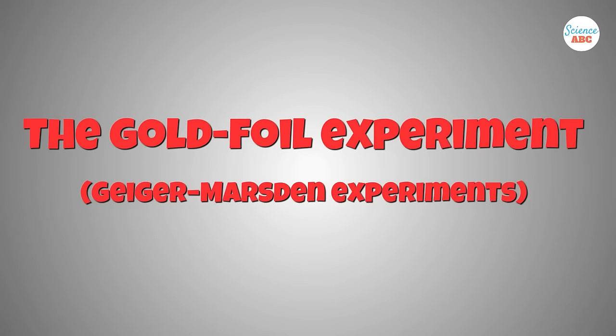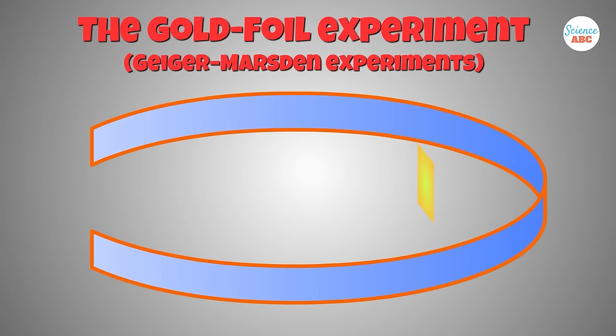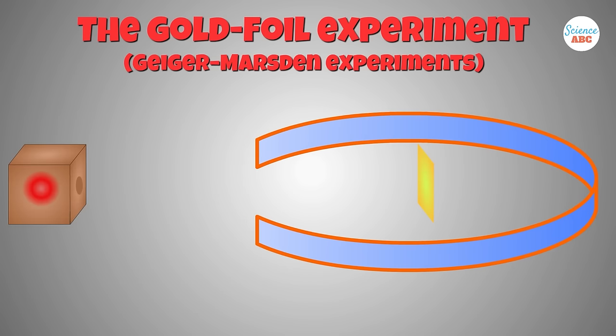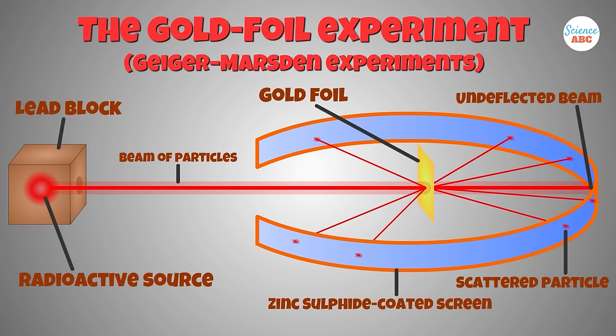The gold foil experiment, also known as Geiger-Marsden experiments, consisted of a thin sheet of gold foil with a circular zinc-sulfide-coated screen behind it. The screen would flash every time an alpha particle hit it.